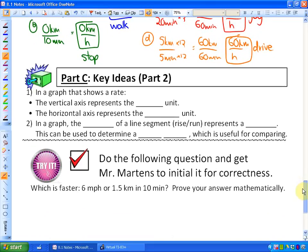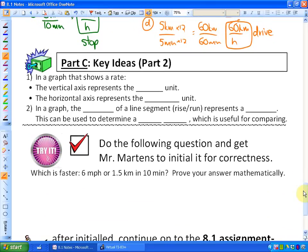So the last part of this is the key ideas. Part C, the key ideas. The key ideas for this particular section are as follows. First of all, in a graph that shows a rate, the vertical axis always represents the first unit.